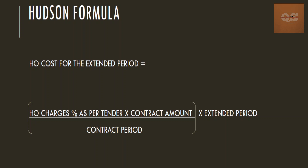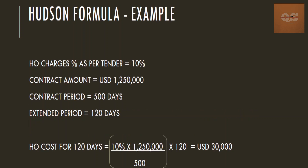Basically, the formula is: head office charges percentage (as per your tender document) multiplied by your contract amount, divided by the contract period, multiplied by the extended period. Let's see an example to understand this better.